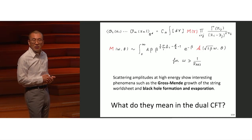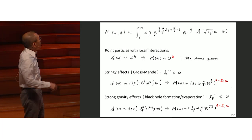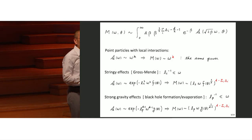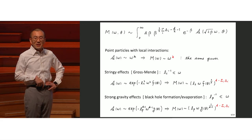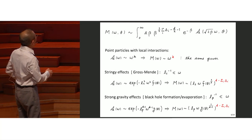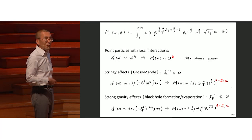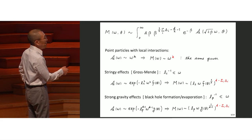The main question is what Gross-Mende and those phenomena mean in the context of the dual CFT. As an exercise, we have the relation between Mellin amplitude and flat space amplitude. If you have a point particle scattering in ADS and consider tree-level Witten diagrams, the amplitude will be polynomial in momentum. If you plug this in and do the integral, you get a power behavior.